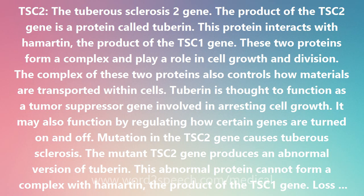Mutation in the TSC2 gene causes tuberous sclerosis. The mutant TSC2 gene produces an abnormal version of tuberin. This abnormal protein cannot form a complex with hamatin, the product of the TSC1 gene. Loss of this protein complex causes cells to divide too often, resulting in cell overgrowth and benign tumors.